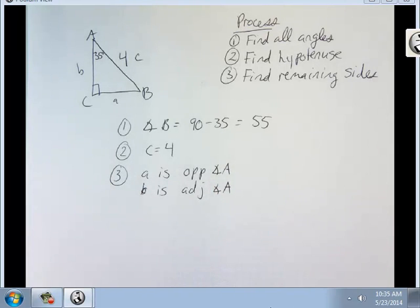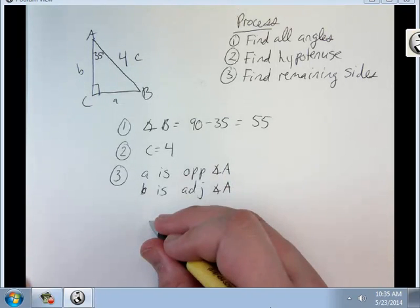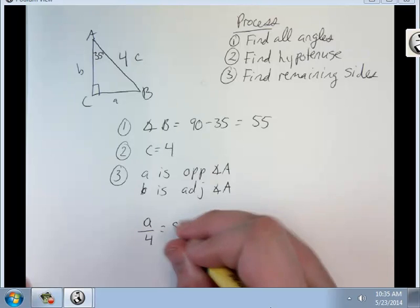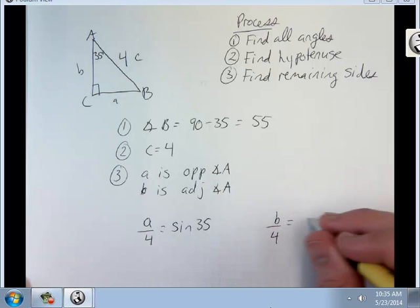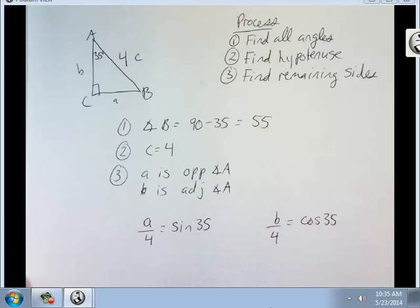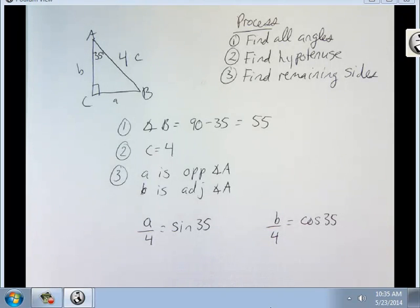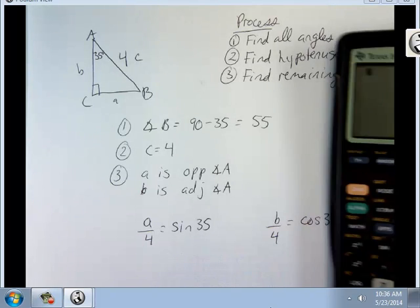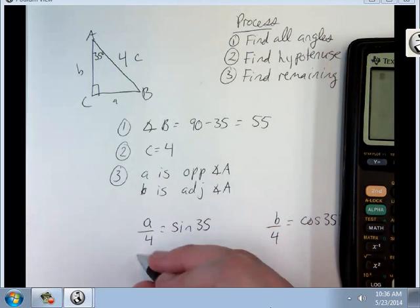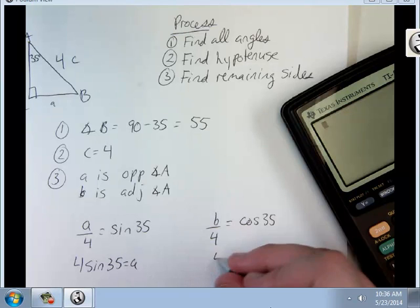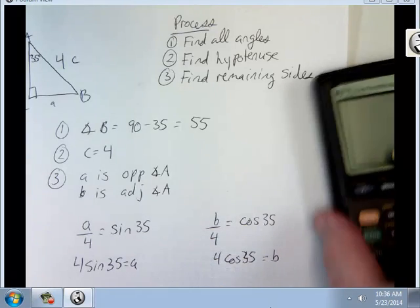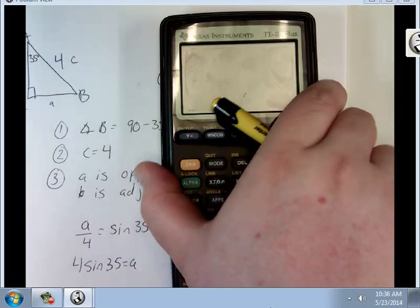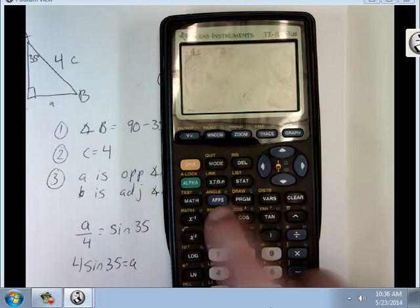So I do A over 4 equals sine 35. And B over 4 equals cosine 35. If I were to cross multiply, I get 4 sine 35 equals A. And 4 cosine 35 equals B. Here it should be good. 4 sine 35 gives me 2.294.